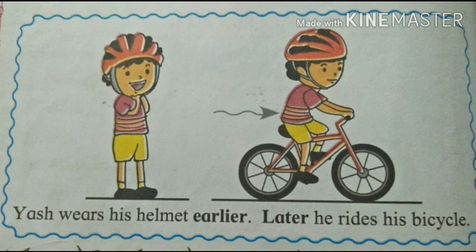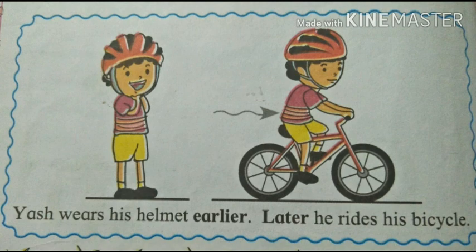That's why we all wear helmet first and then we ride bicycle or bike. Here also, the boy Yash wears his helmet earlier and later he rides his bicycle. It means he wears the helmet — that is the first thing before riding the bicycle — and afterwards he rides the bicycle. So the first thing, wearing the helmet, is earlier, and afterwards, it means later, he rides his bicycle. I hope, students, you have understood the lesson and the concept of earlier and later.